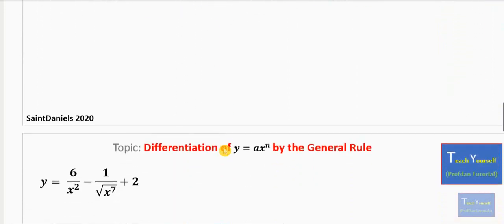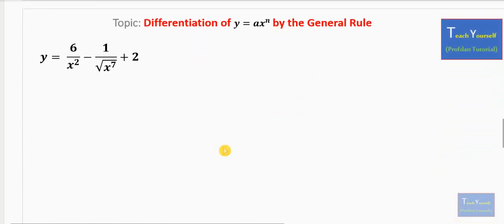Let's look at an example. We are given this function y equals the whole of this, and we are looking for the differentiation of y with respect to x using the general rule. So we can start by having: